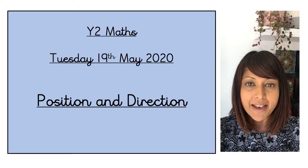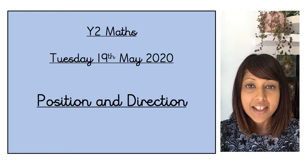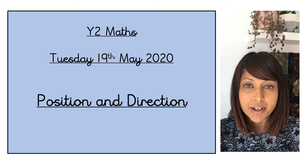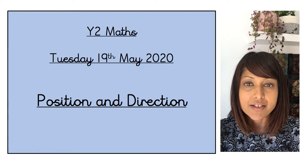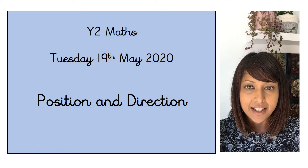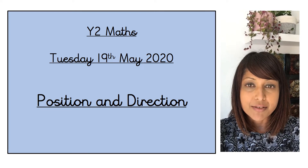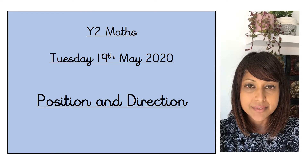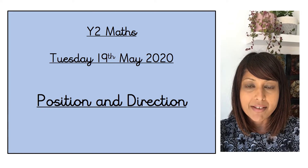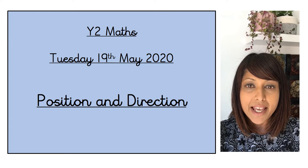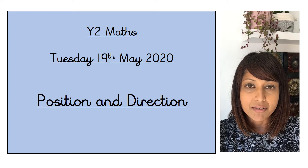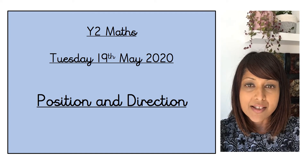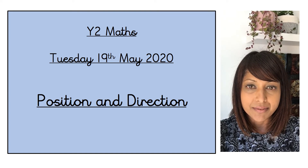Welcome to Tuesday's maths lesson. Today we're going to use what we've learnt about repeating patterns to spot some mistakes. You will need to look at each pattern really carefully to spot where it's gone wrong. Once you've spotted where it's gone wrong, you'll need to explain how the pattern could be corrected. There's also a do it, twist it and solve it sheet today for you to do.